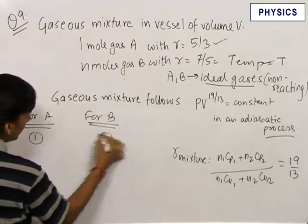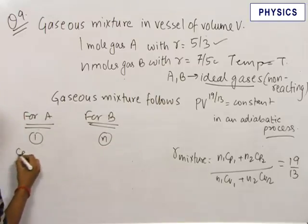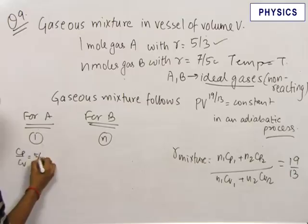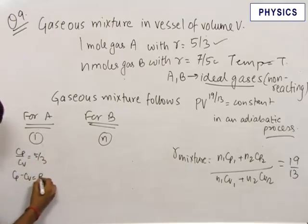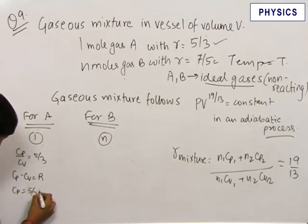Cp upon Cv is given to be equal to 5 by 3 for A and we also know Cp minus Cv is equal to R. Therefore from this we get the value of Cp is equal to 5 by 2 R and Cv is equal to 3 by 2 R for A.